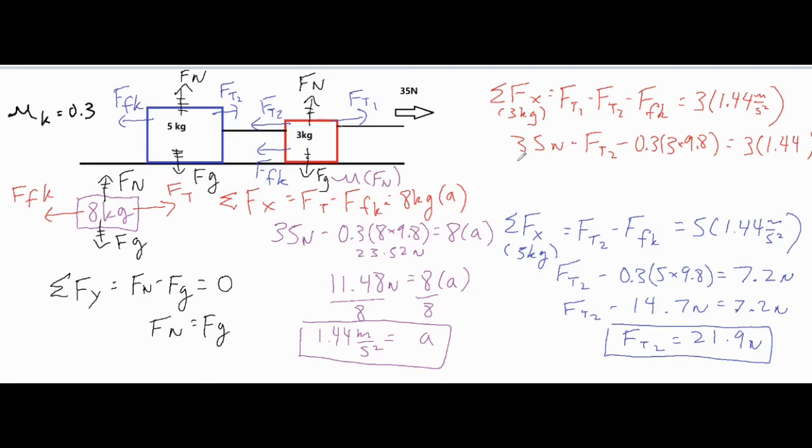So now if we multiply some of our values, we have 35 minus FT2 minus 8.82 equals 4.32 newtons on the right side. So if I add 8.82 to both sides and then subtract 35 from both sides, I would have minus FT2 equals negative 21.9 newtons. The negatives would drop out.